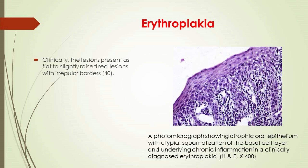Erythroplakia: clinically, the lesions present as flat to slightly raised red lesions. Histopathological characteristics include the lack of excess surface keratinization, some degree of dysplasia, and even carcinoma. A photomicrograph shows atrophic oral epithelium with rete peg colonization of the basal cell layer and underlying chronic inflammation in a clinically diagnosed erythroplakia.